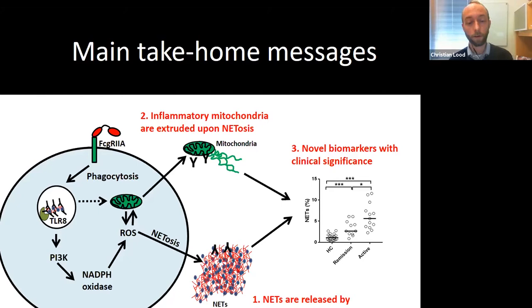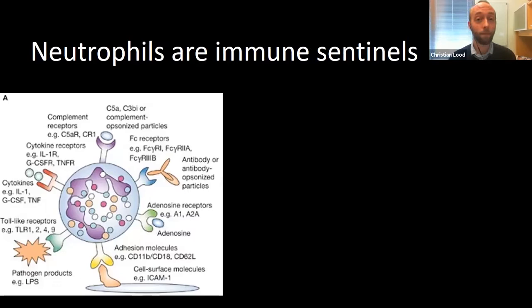Since most of this presentation will be on neutrophils, I wanted to introduce the actual cell we're talking about. Neutrophils are part of our innate immune system — very common in the bloodstream, composing about 60% of white blood cells. They are incredible immune cells that can sense their environment through many different immune receptors on the cell surface, including receptors for complement components, cytokines, chemokines, antibody Fc receptors, and toll-like receptors.